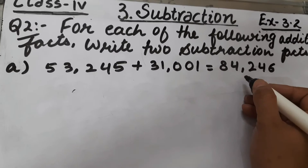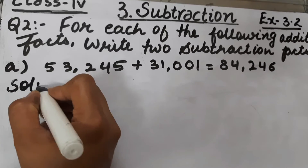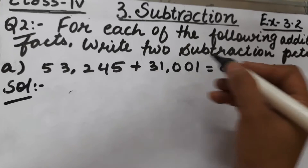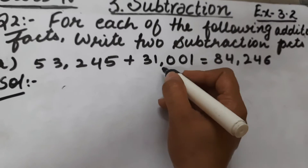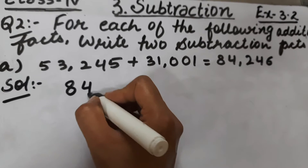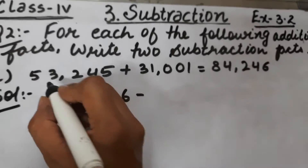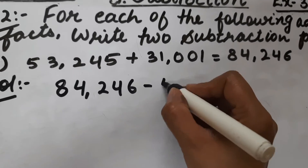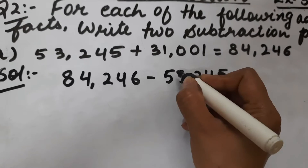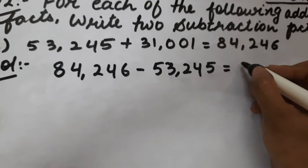So how will we write the subtraction fact? If we subtract the first addend from the total, we will get the second addend. So this is our first subtraction fact: if we subtract the first addend 53,245 from the total, that is 84,246, we will get 31,001.